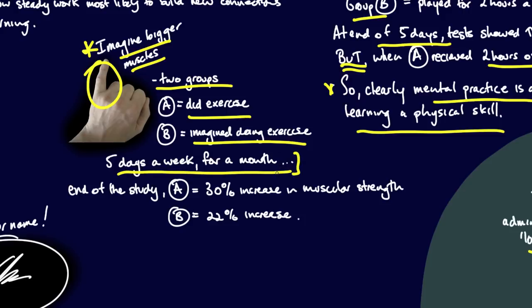At the end of the study, group A had a 30% increase in muscular strength. Terrific. The group that just imagined had a 22% increase. Hard to believe, but that was the case.